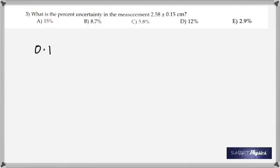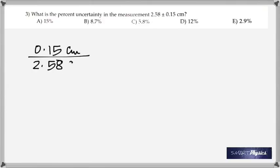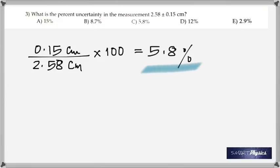What's the percent uncertainty in this measurement: 2.58 ± 0.15 centimeter? The uncertainty is 0.15 cm. You take 0.15 divided by 2.58, times 100, which gives 5.8%. All you do is take the uncertainty part divided by the given number times 100.